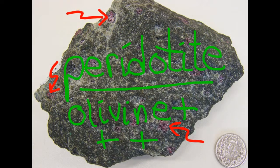Here's a peridotite with pyroxene and some red garnets. Ultramafic rocks are important because they're thought to be dominant components of Earth's mantle.